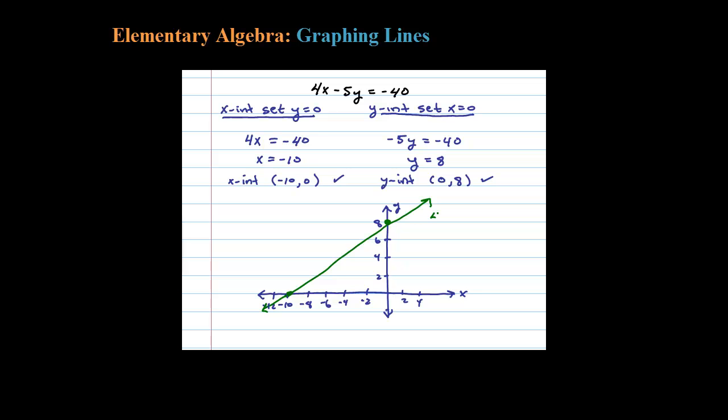This is the equation of the line, 4x minus 5y equals negative 40. Two points determine a line, so it's a nice method for graphing—just find the x and y intercepts.